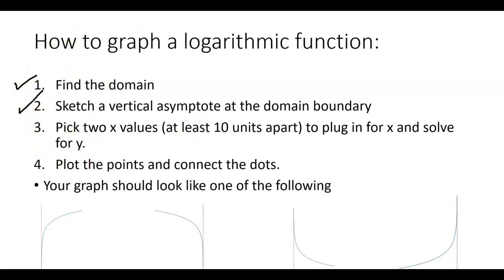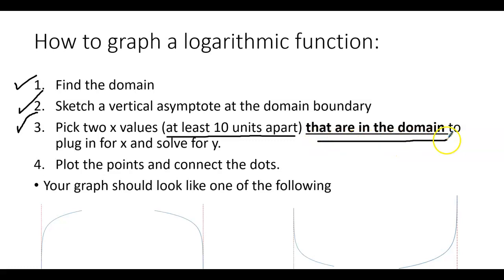So all of these graphs have a vertical line, it's kind of like an invisible boundary that your graph cannot cross. So all these are going to have some kind of a vertical asymptote, and it is found by finding your domain. After that we're going to pick two x values. And I'm going to make a change here to these instructions. We're going to pick two x values that are, I would say, at least 10 units apart that are in the domain.